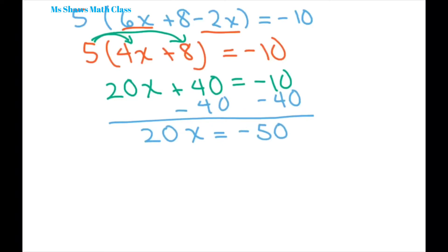And then we're going to divide both sides by 20. And you get x equals, and these zeros are going to cancel out to get negative five halves. So our solution should be negative five halves or 2.5.